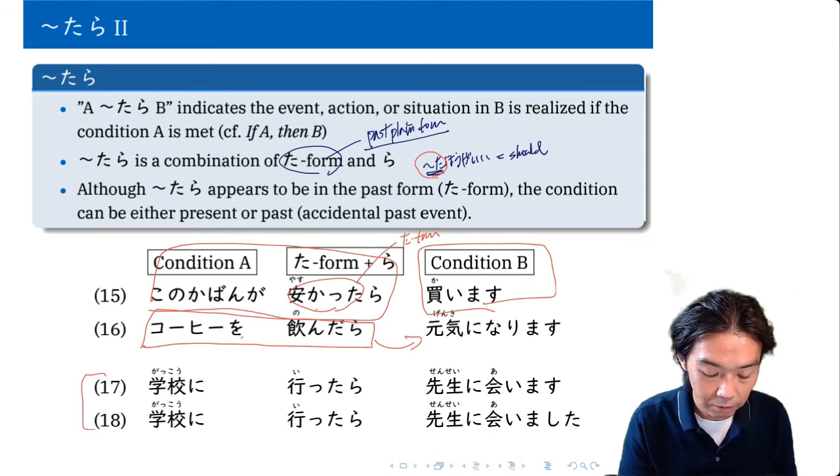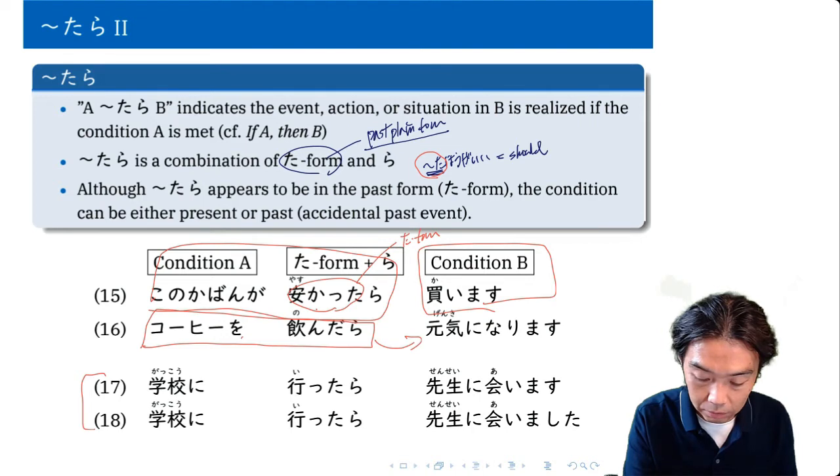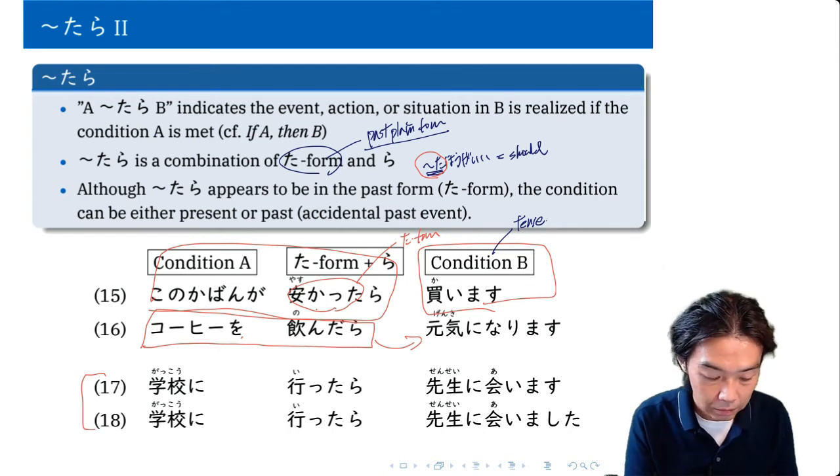And the next two examples, just to illustrate, Tara has nothing to do with the past tense. So what we care is the tense of condition B. So the tense of condition B indicates if it happened or not. So the first example is 学校に行ったら先生に会います. If I go to school, I will see the teacher.